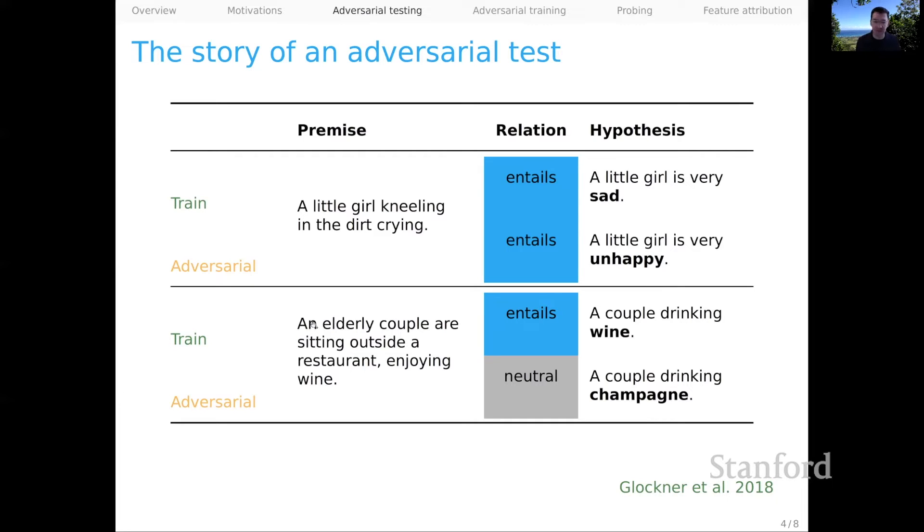The second example is similar. We begin from the SNLI example. An elderly couple are sitting outside a restaurant enjoying wine, entails a couple drinking wine. And here they just changed wine to champagne. What we would expect is that a system that knew about these lexical items and their relations would flip to predicting neutral in this case. But as you might imagine, systems continue to predict entails because they have only a very fuzzy understanding of how wine and champagne are related to each other.